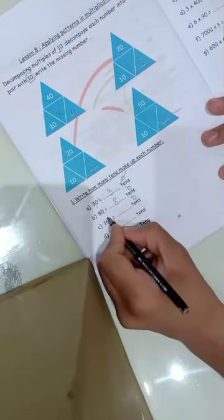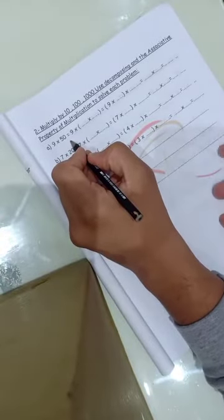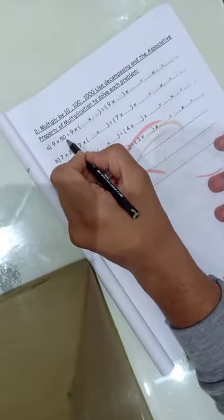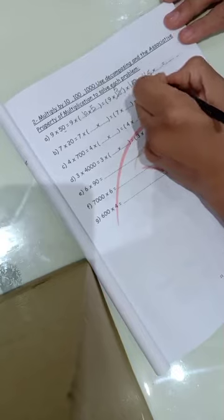Let's go to page 21. 9 times 50. Factorize 50: it will be 10 times 5. So 9 times 10 times 5. 9 times 5 equals 45, then multiply by 10. Kick the zero out and write 450.